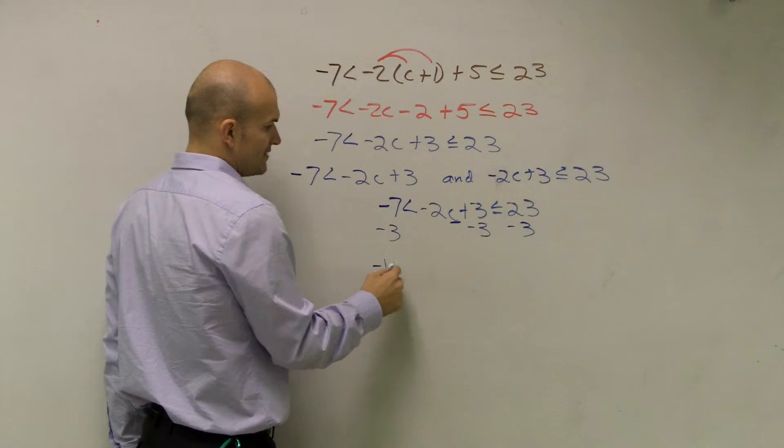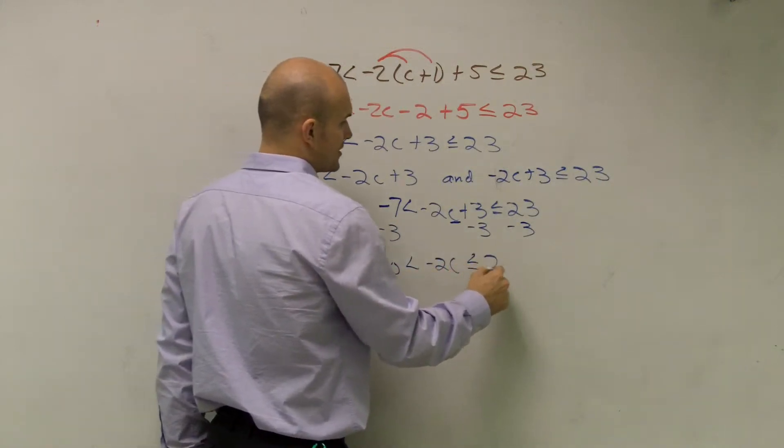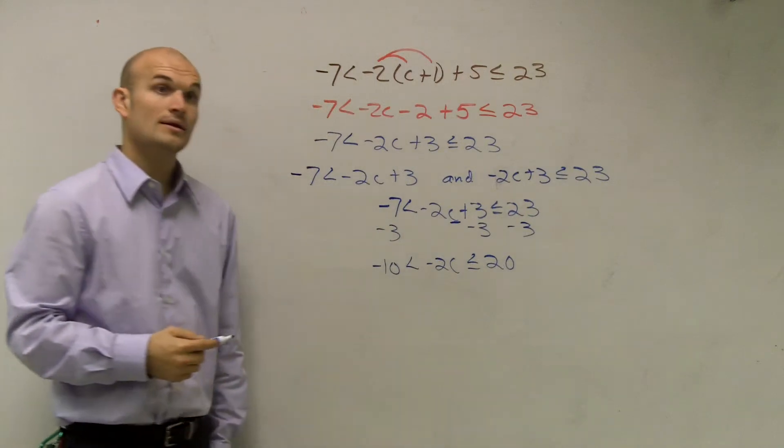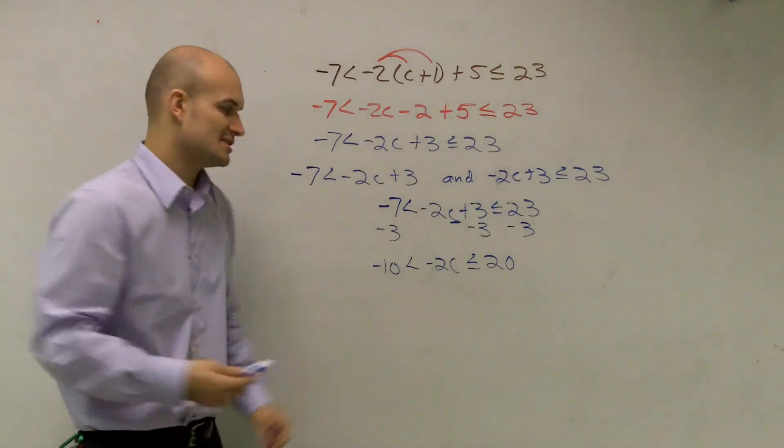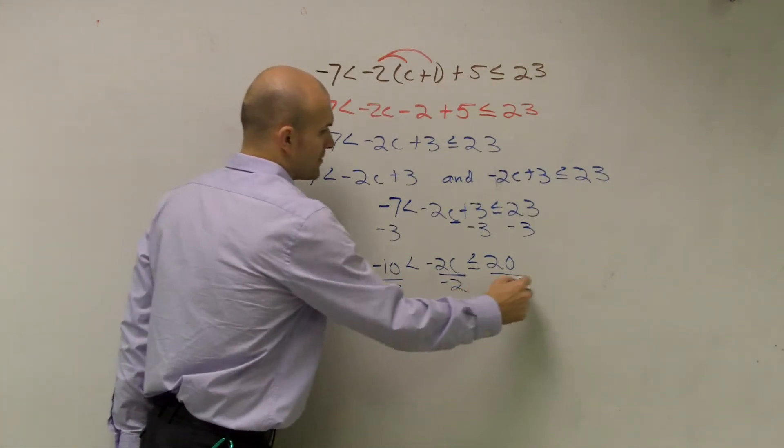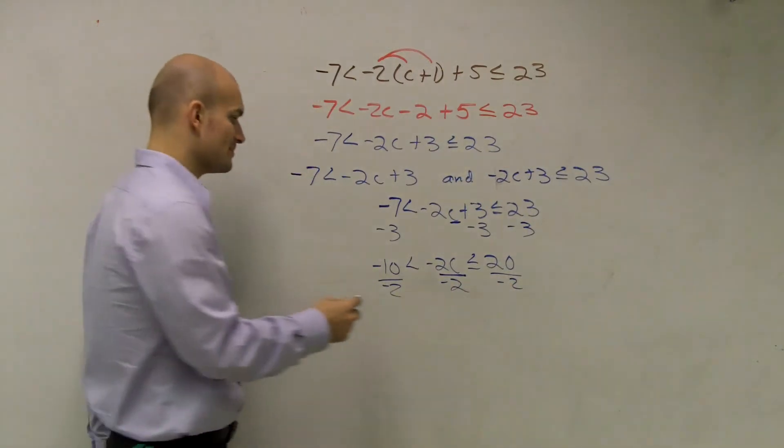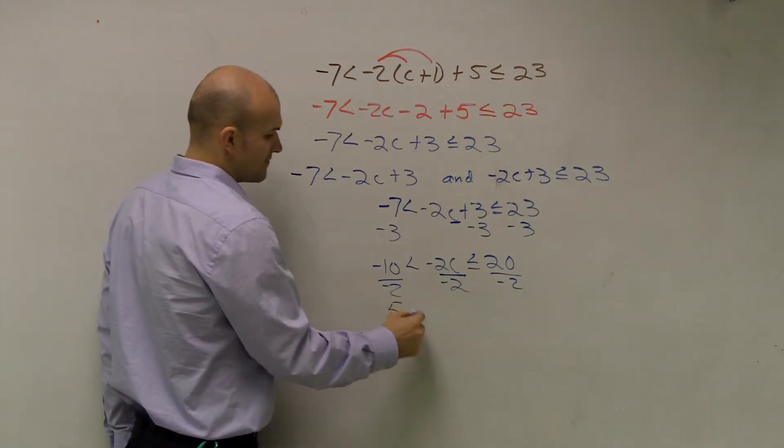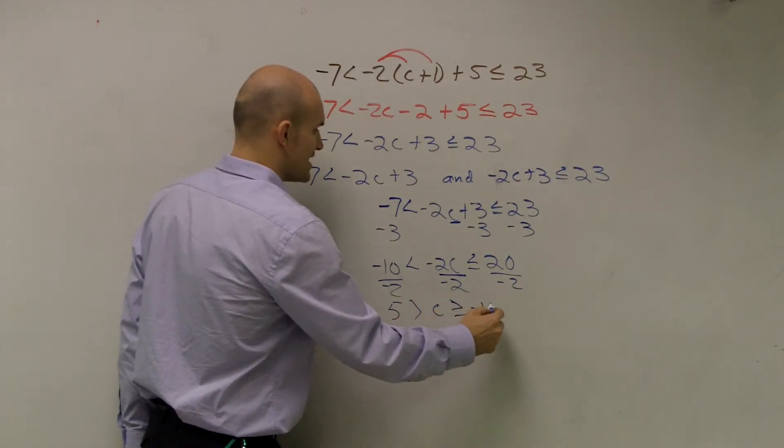So therefore, I'll have negative 10 is less than negative 2c is less than or equal to 20. Now I need to get rid of that negative 2. Since the negative 2 is multiplying by my c, I need to divide. And I notice that that is divided by a negative number. So whenever you divide by a negative number, we need to make sure we flip the sign. Positive 5 is now greater than c, which is now greater than or equal to negative 10.